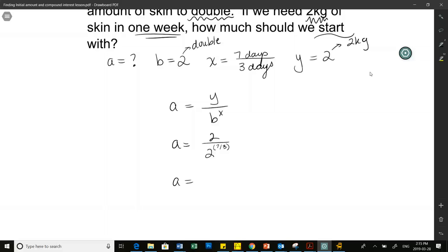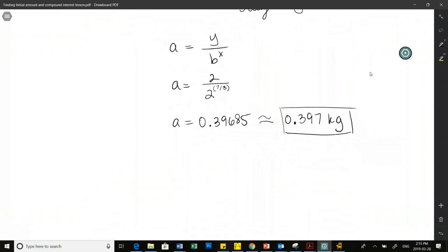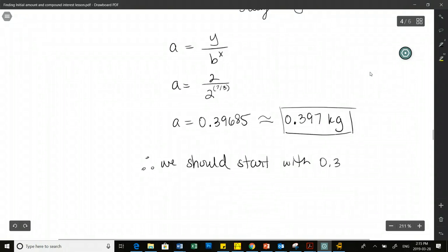What did you get? 0.396. So it's about 0.397 kilograms. I think because it's so little, we want to be a little bit more precise with this starting value, right? So I would say probably around three decimals. Usually I'll have you round to either two or three. So therefore, we should start with 0.397 kilograms of skin in order to have two kilograms in one week.